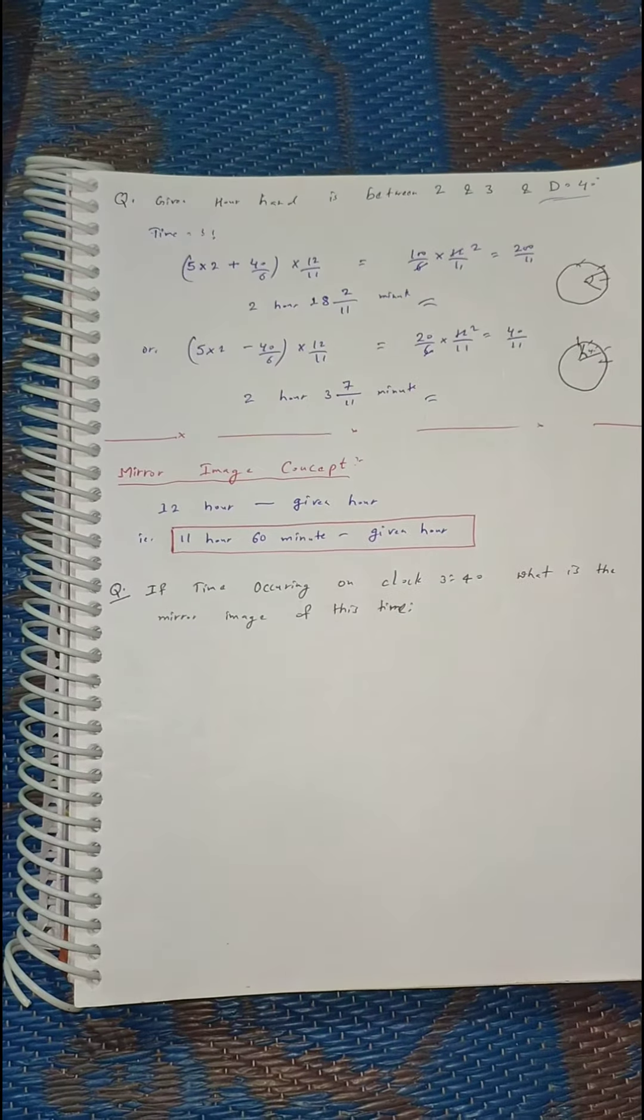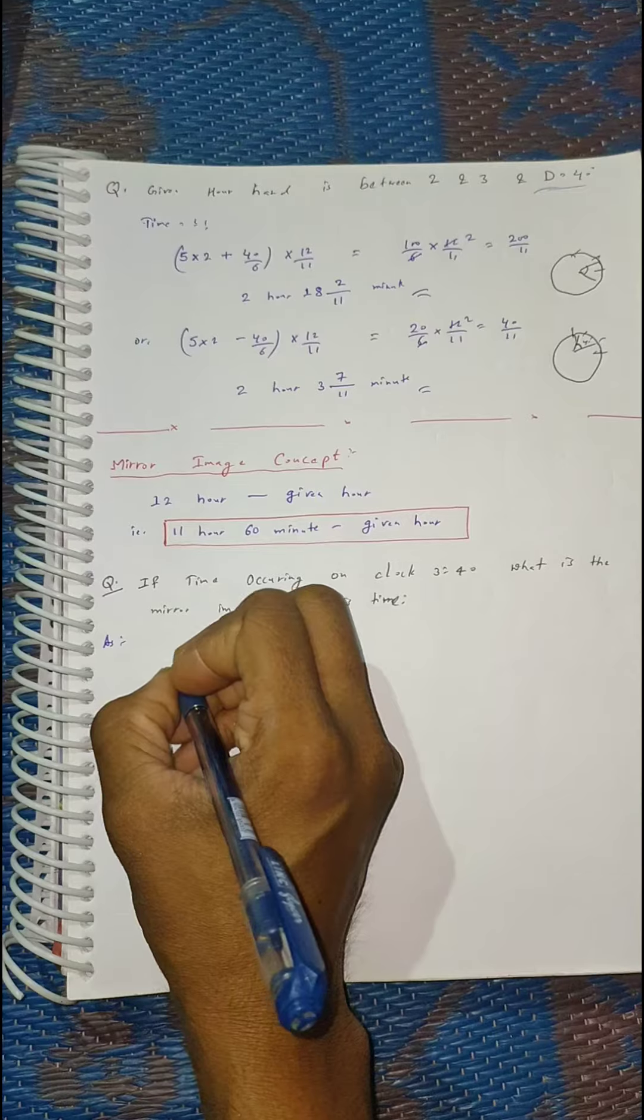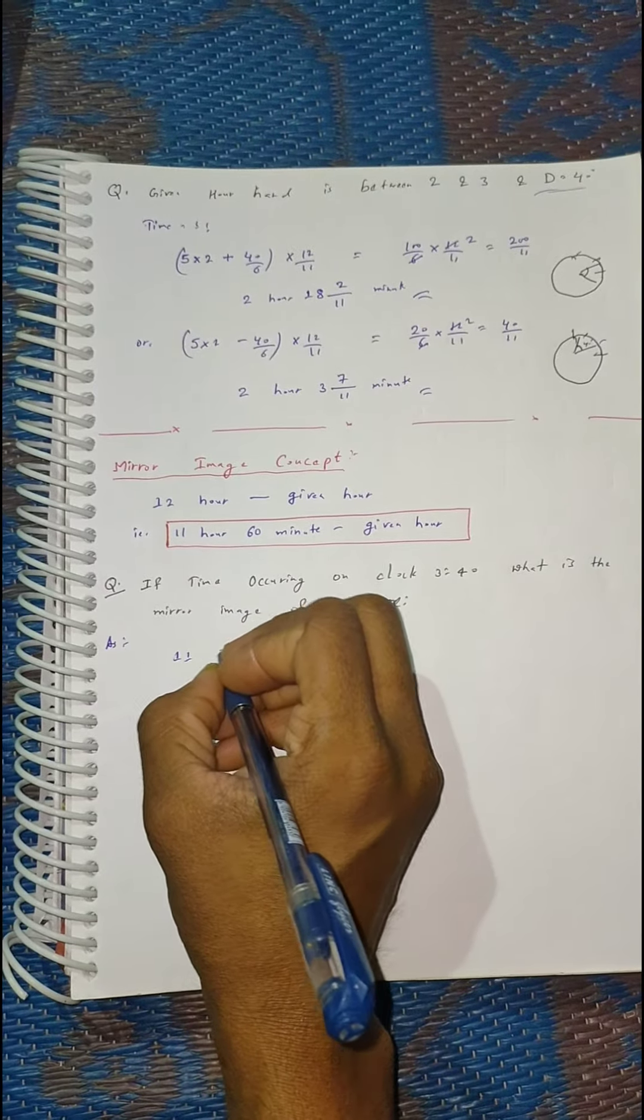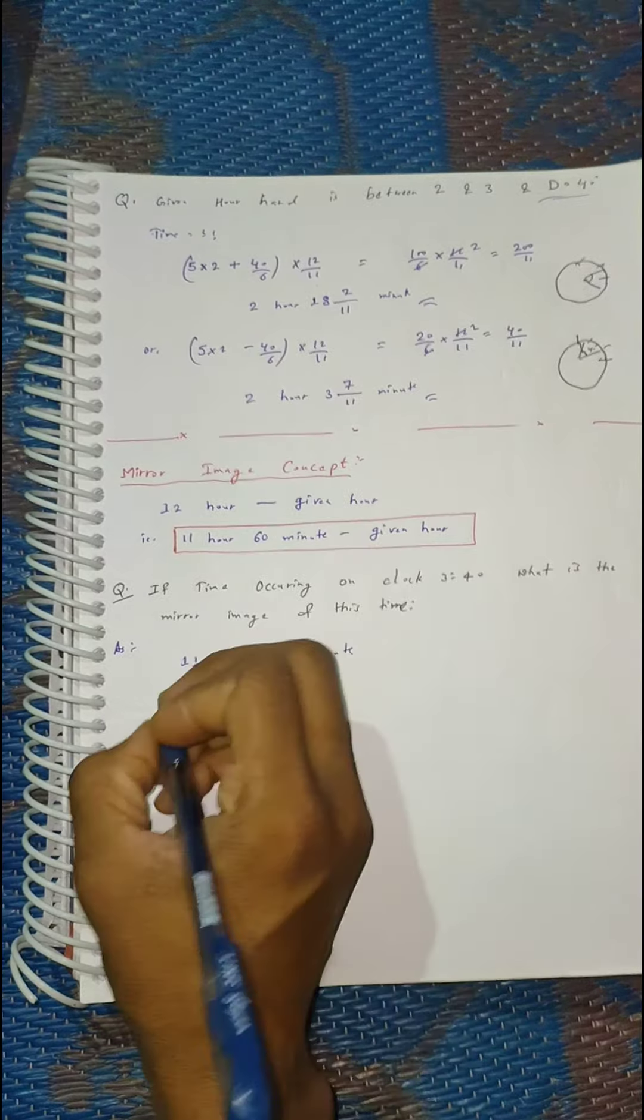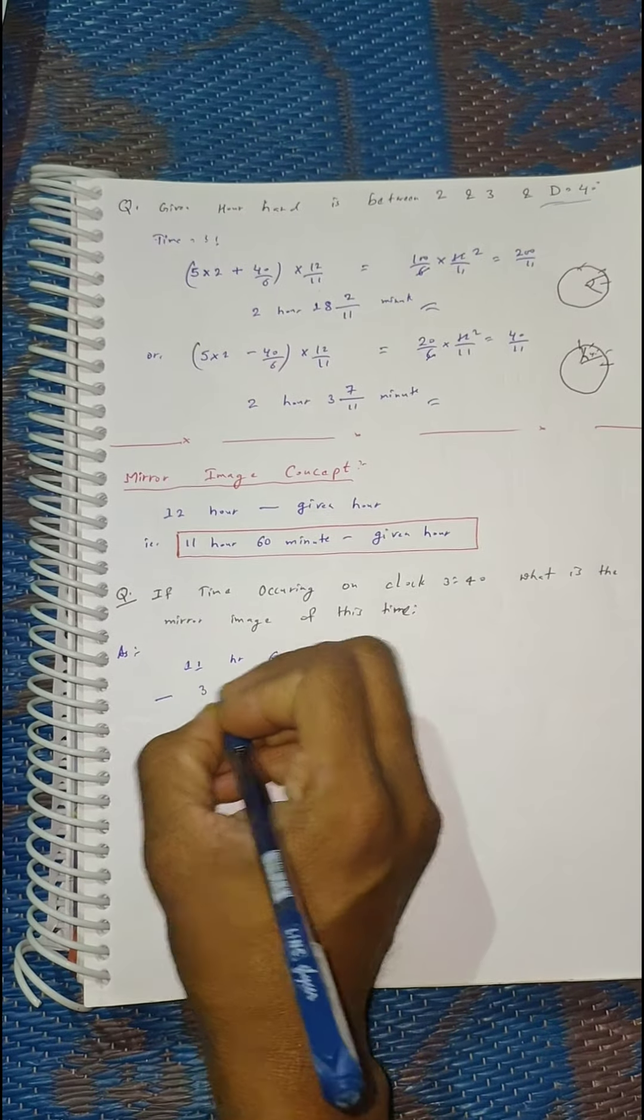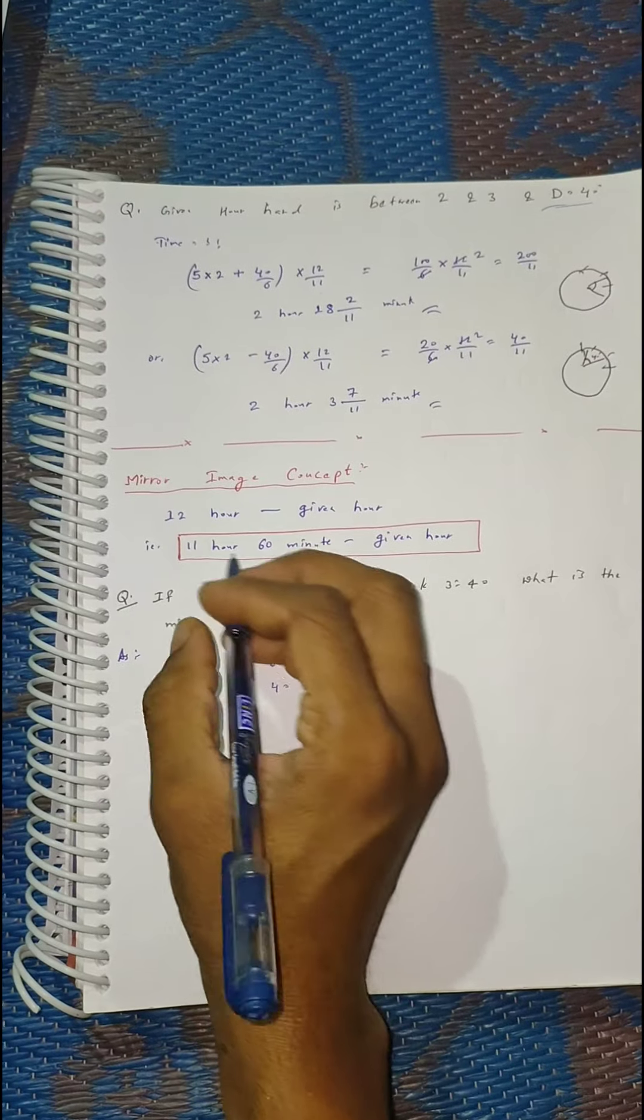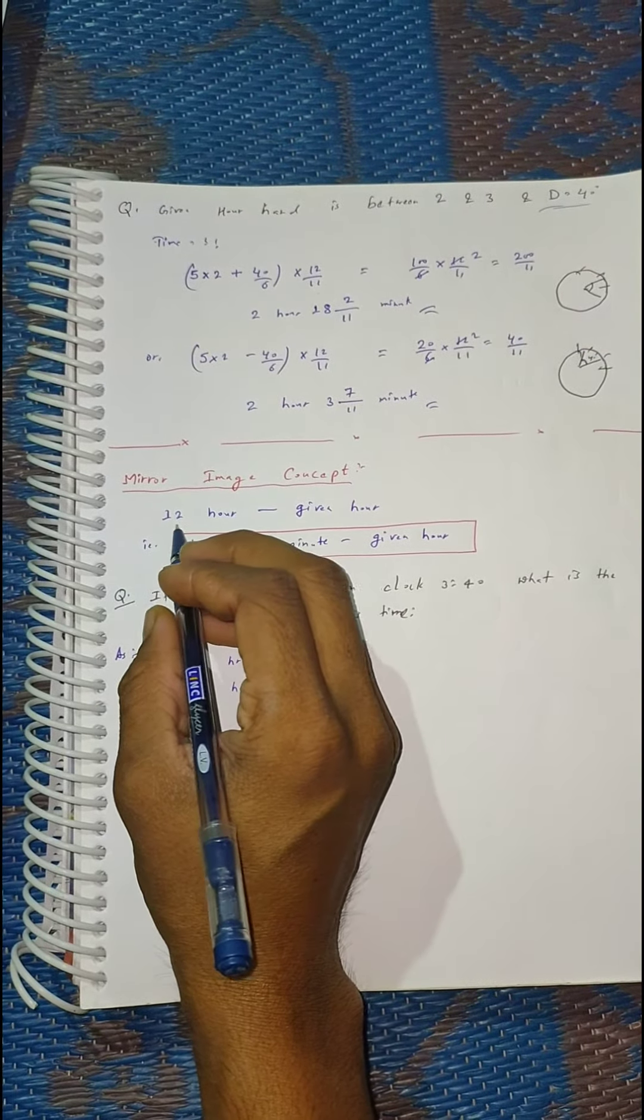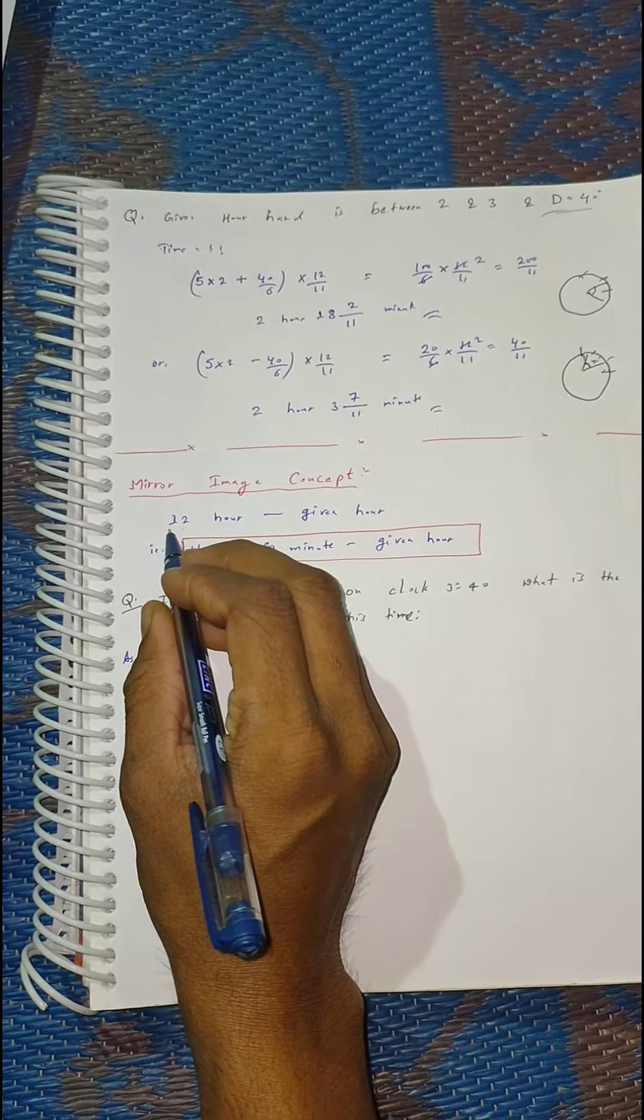The solution is: 11 hours 60 minutes minus 3 hours 40 minutes. In our clock, we have hours from 1 to 12, so we use 12-hour format here.